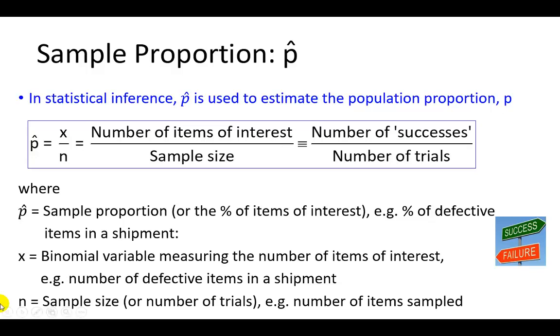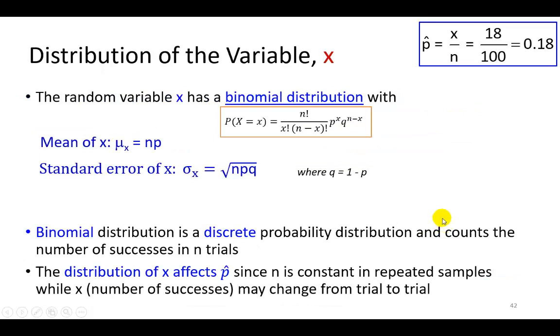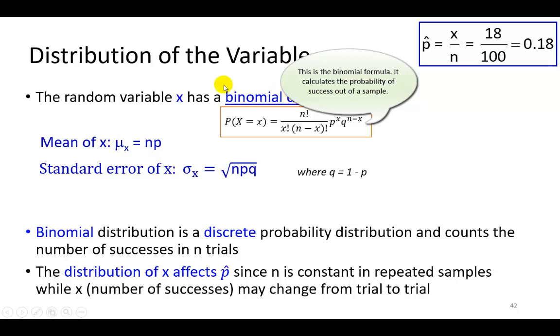As it is, x is going to be a binomial variable because it's measuring the number of successes when you conduct the experiment. It's looking, in this example, for defective parts in the shipment. As a binomial variable, it follows the binomial distribution. The binomial distribution is one that governs the behavior of a variable, x, that follows what's called a Bernoulli process.